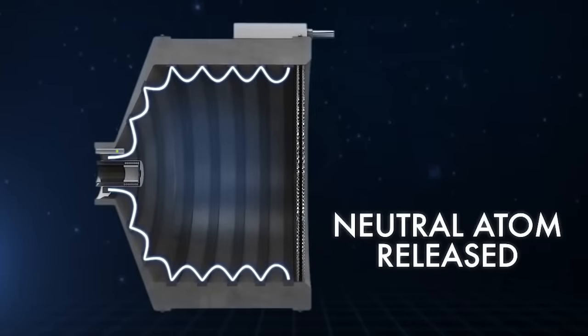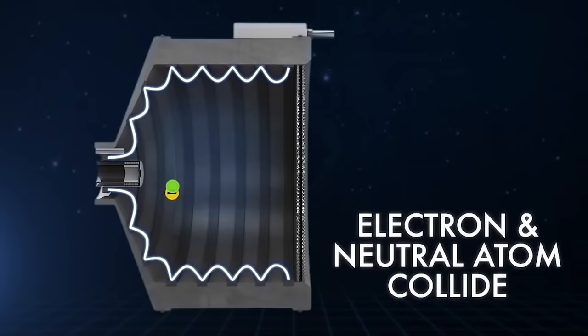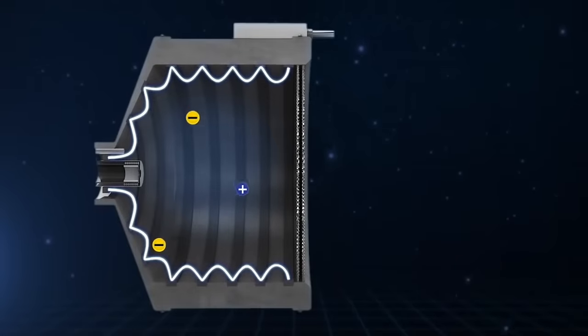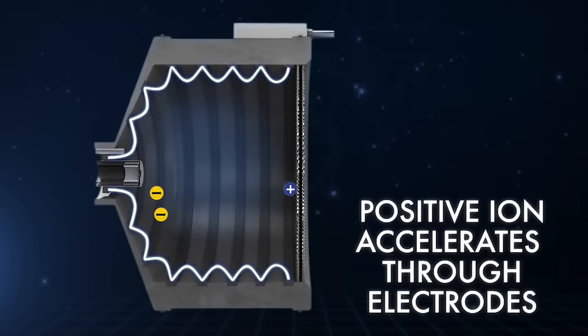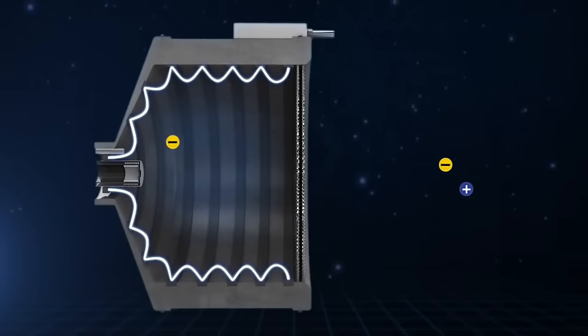Here, in this ion thruster, the xenon gas is ionized by knocking out an electron, using other electrons in the ionization chamber. These positive ions are attracted to a negatively charged grid and shot out of the back at incredibly high speeds. As they shoot out the back, an electron is also reintroduced to neutralize the ion and preventing it from being attracted back to the thruster.